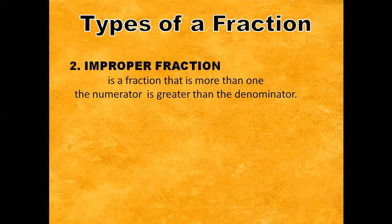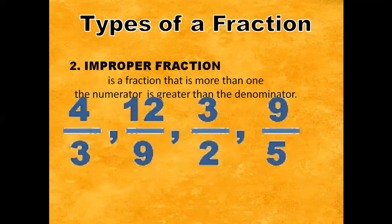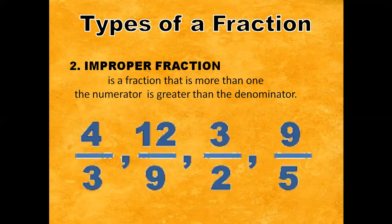Improper fraction is a fraction that is more than one. The numerator is greater than the denominator. For example, we have four-thirds, twelve-ninths, three-halves, nine-fifths. Four, twelve, three, and nine are the numerator, and it is greater than the denominator.